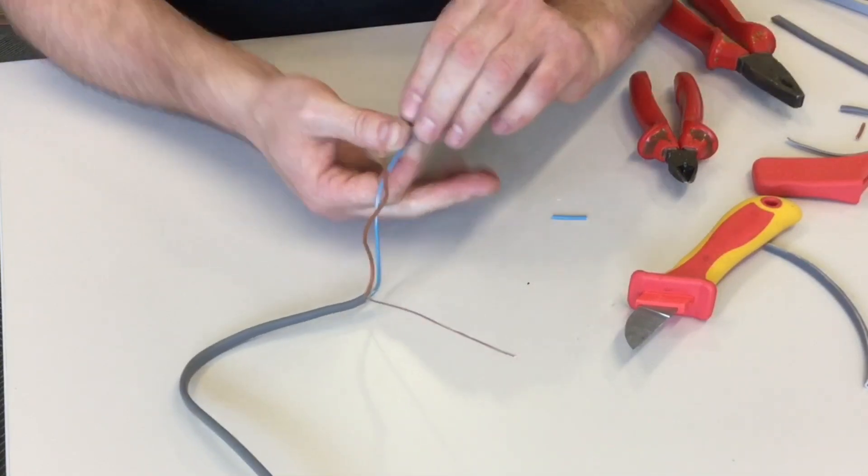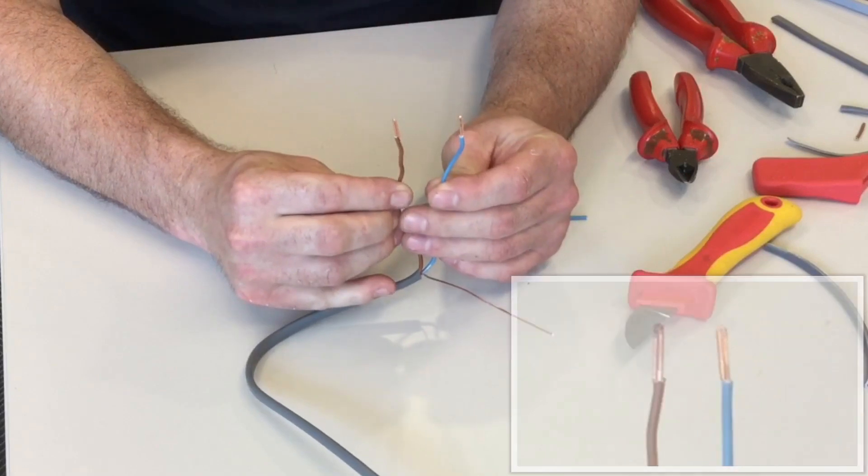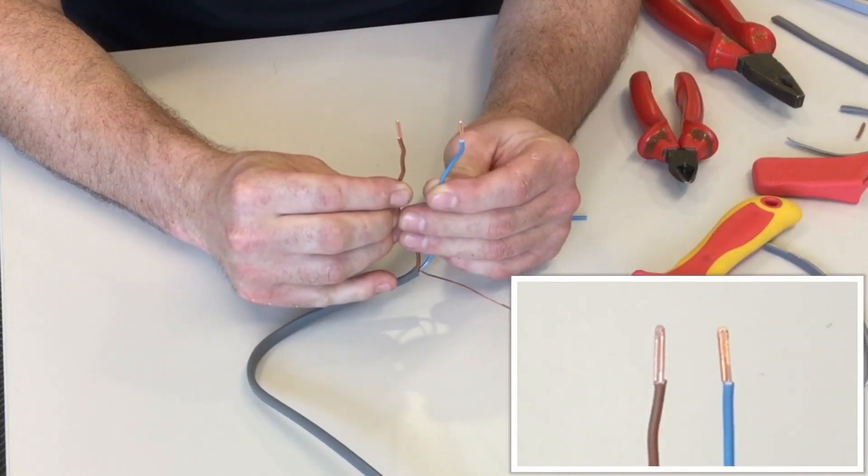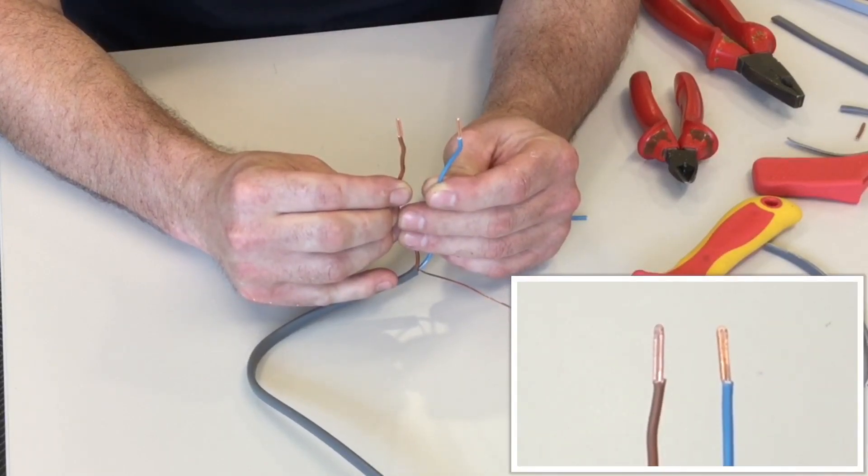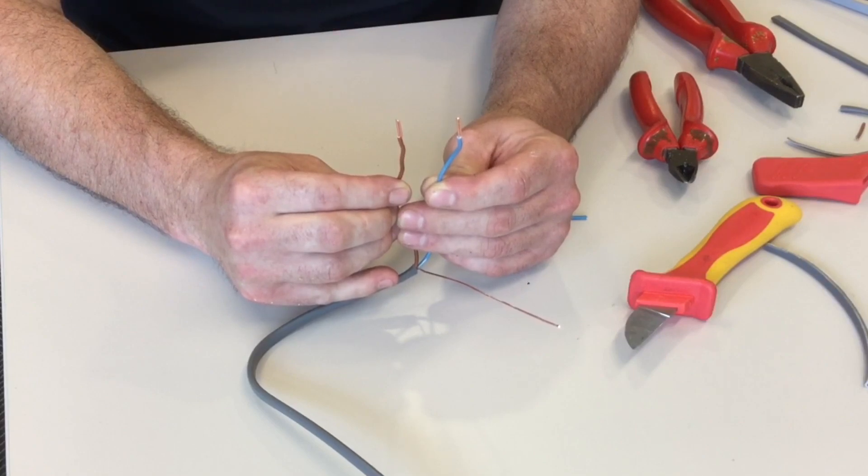Like so. And then we have got two conductors doubled back on themselves and terminated at a desired length compared to what your lecturer will require you to terminate them back at.